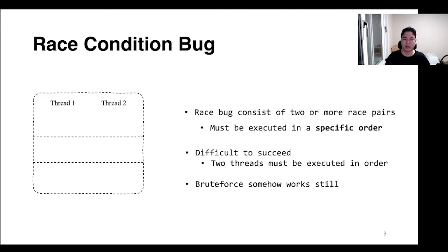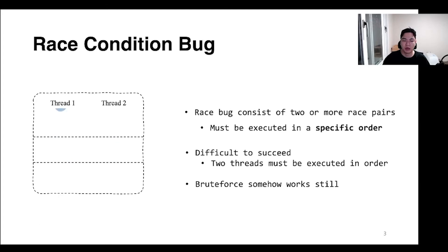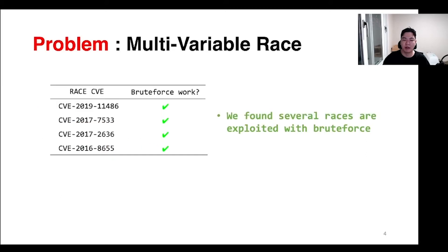A race condition bug consists of two or more race pairs, and race condition bugs lead to memory vulnerabilities such as use-after-free or out-of-bounds when executed in a specific order. However, it is very difficult to execute in the desired order on two different threads, but we can try infinitely many times through brute force until it is executed in the desired order. We found several race conditions are exploited with brute force.